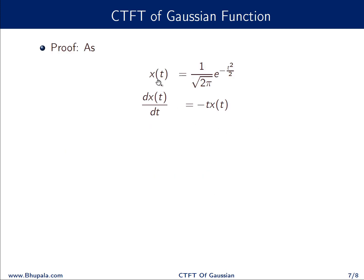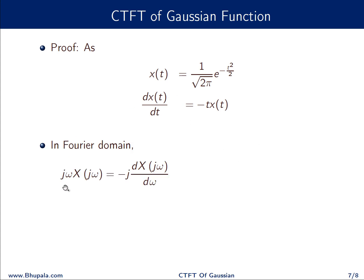Let x(t) = (1/√(2π)) e^(−t²/2). If we differentiate this, we get (1/√(2π)) e^(−t²/2) multiplied by −t, which is −t·x(t). So the left-hand side is the derivative of x(t) and the right-hand side is −t·x(t). This reminds us to apply the differentiation in time domain property to the left-hand side and the differentiation in frequency domain property to the right-hand side. In the Fourier domain, the left-hand side becomes jω·X(jω) and the right-hand side becomes −j·d/dω of X(jω).